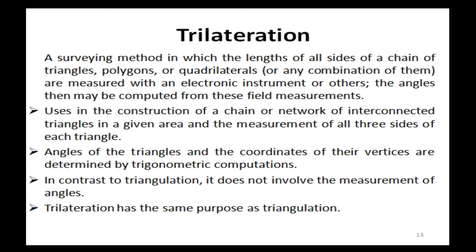Trilateration: a surveying method in which the lengths of all sides of a chain of triangles, polygons, or quadrilaterals, or any combination of them, are measured with an electronic instrument or others; the angles may then be computed from these field measurements. It involves the construction of a chain or network of interconnected triangles in a given area and the measurement of all three sides of each triangle. Angles and the coordinates of vertices are determined by trigonometric computations. In contrast to triangulation, trilateration does not involve the measurement of angles.